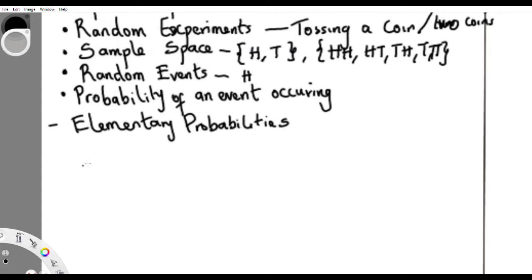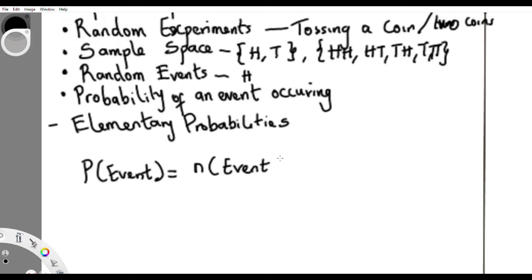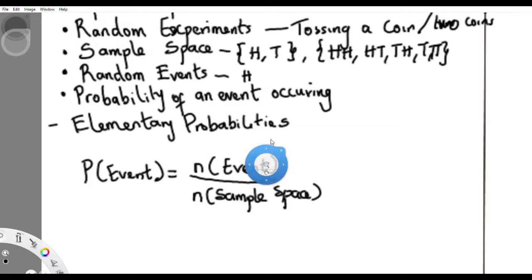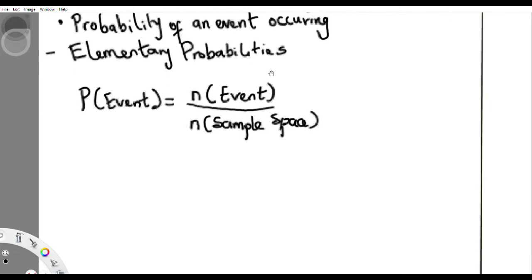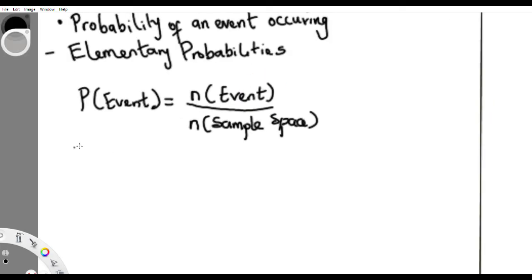The probability of an event occurring is actually a formula. The probability of an event occurring equals the number of ways that event can occur, all over the total number of outcomes in the sample space.